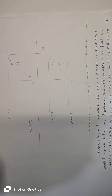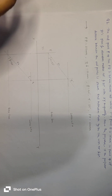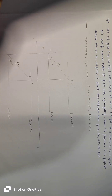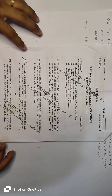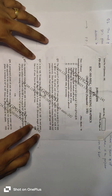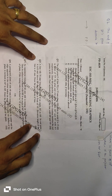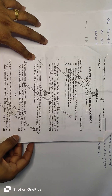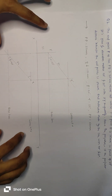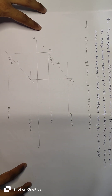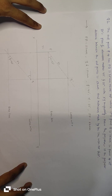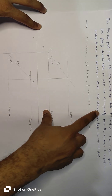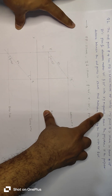Hello guys, welcome to the channel. Today we see the solution of the end semester paper in Engineering Graphics 2025. Question number one: the end point P of line PQ is 25 mm above HP, while its point Q...